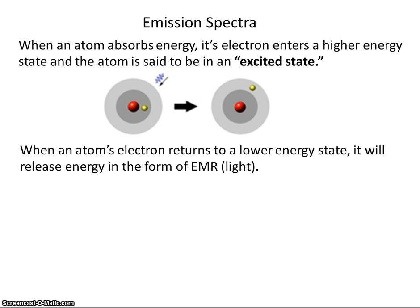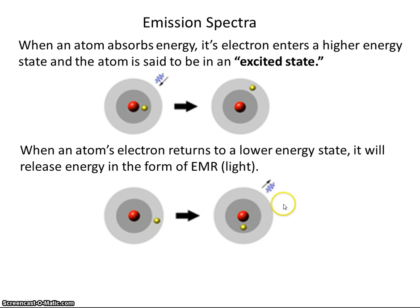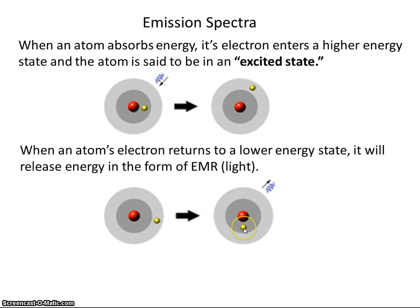When an atom's electron returns to a lower energy state, it will release energy in the form of electromagnetic radiation, or light. So here's our atom that's in the excited state — the same atom as what we have pictured here. This atom in the excited state will have its electron return to a lower state, which is what we see here. As this electron falls to a lower energy state, it releases some energy as light, and it might be in the visible spectrum, and then we can see it.